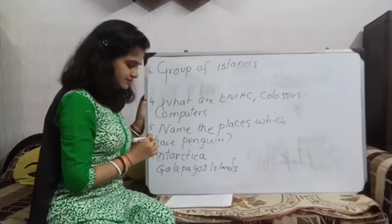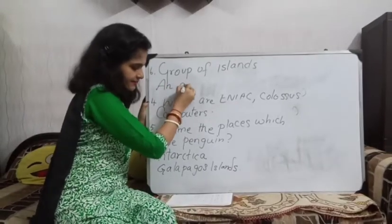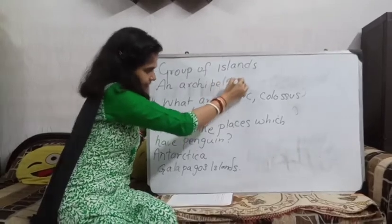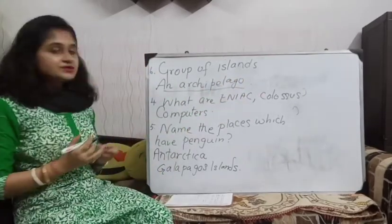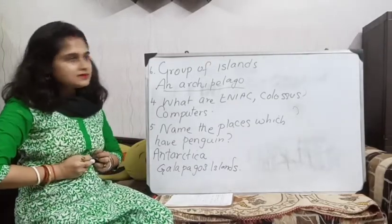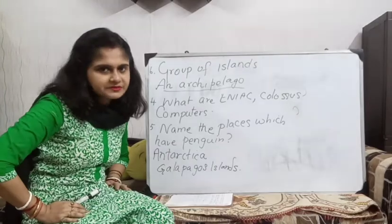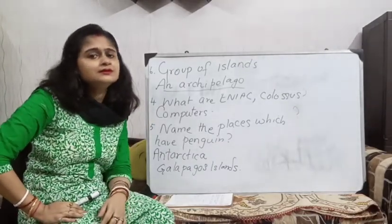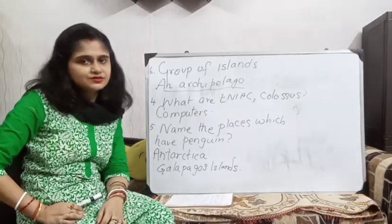The last question, number six: a group of islands is called what? The answer is an archipelago. I've given you six questions from this chapter. You will write them down, take a picture, and send it to me. Take care!